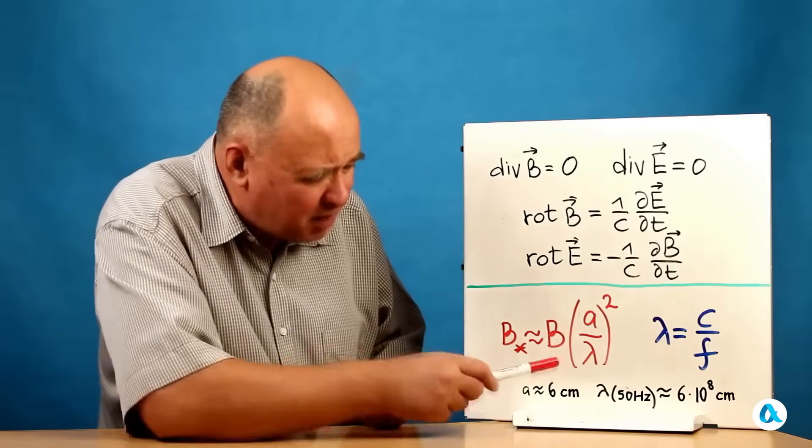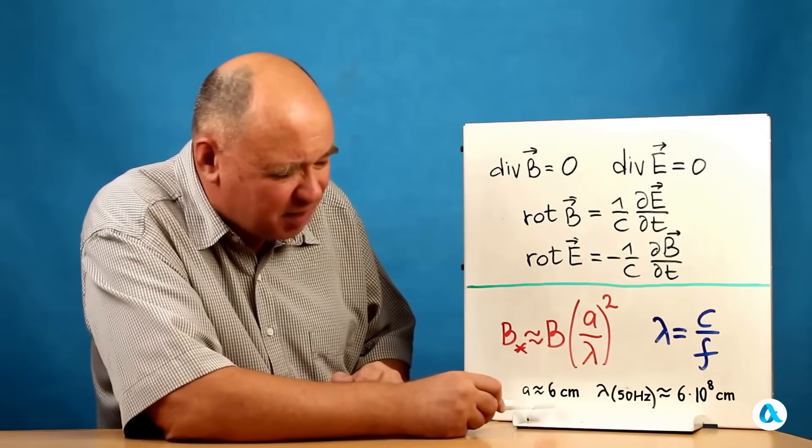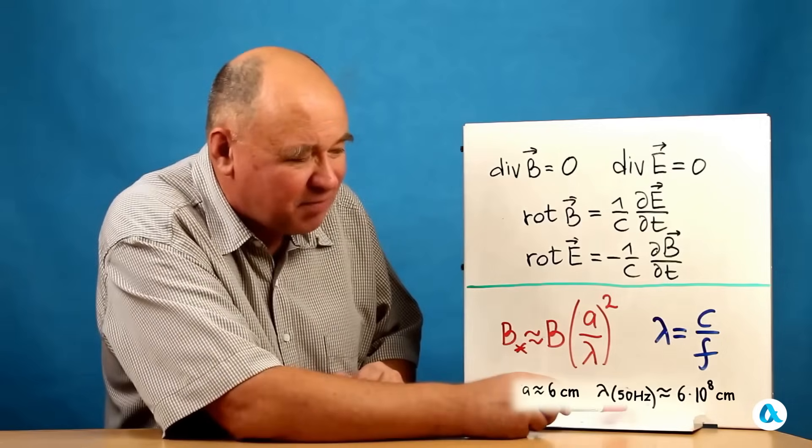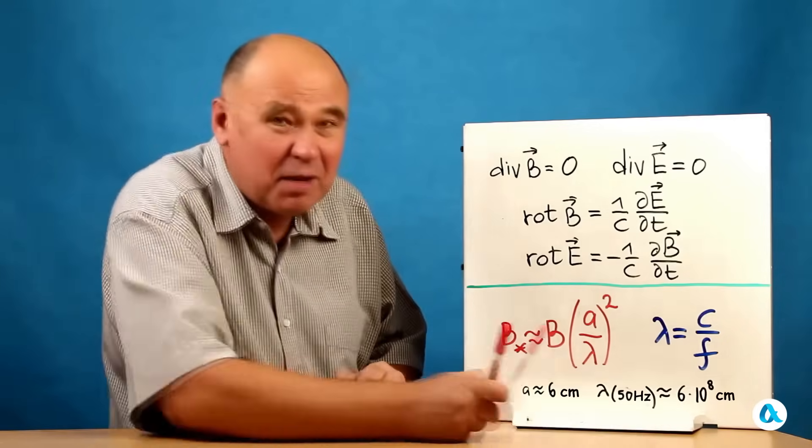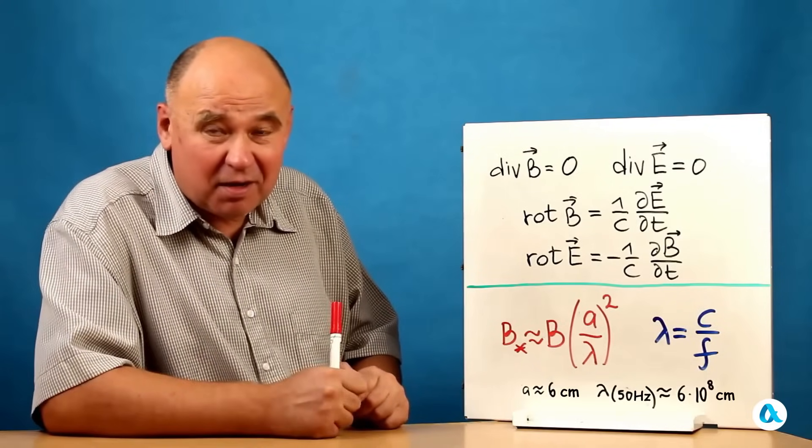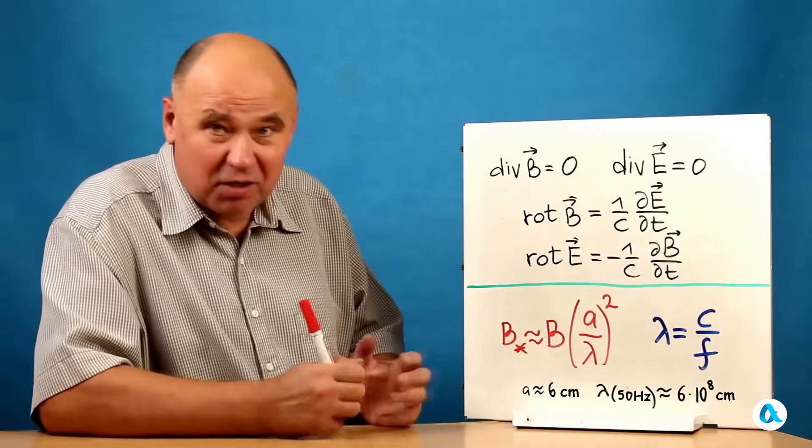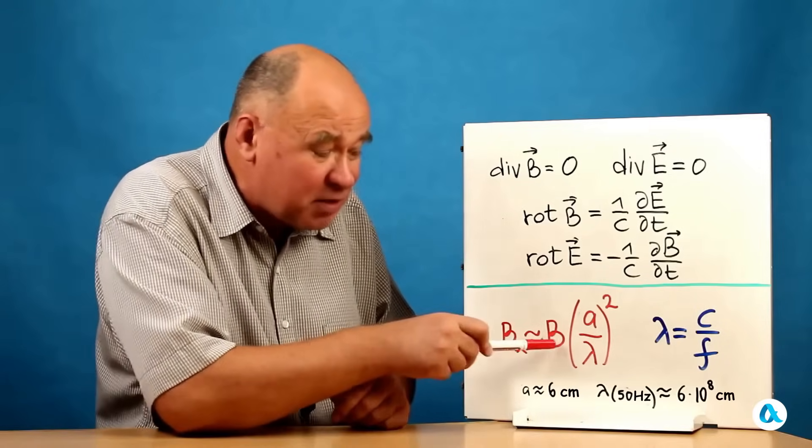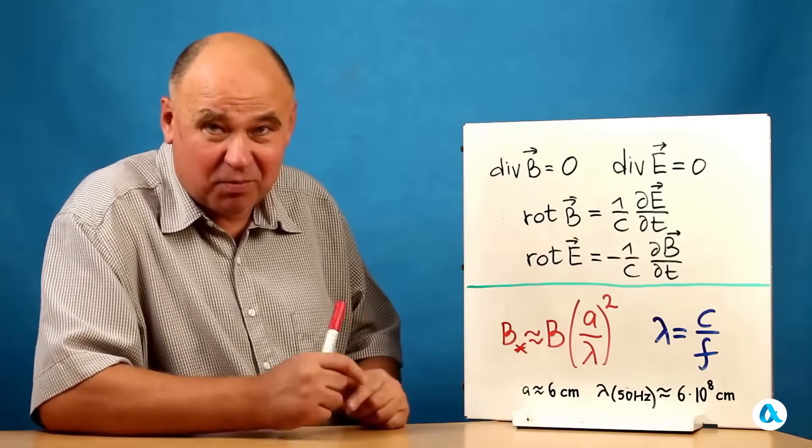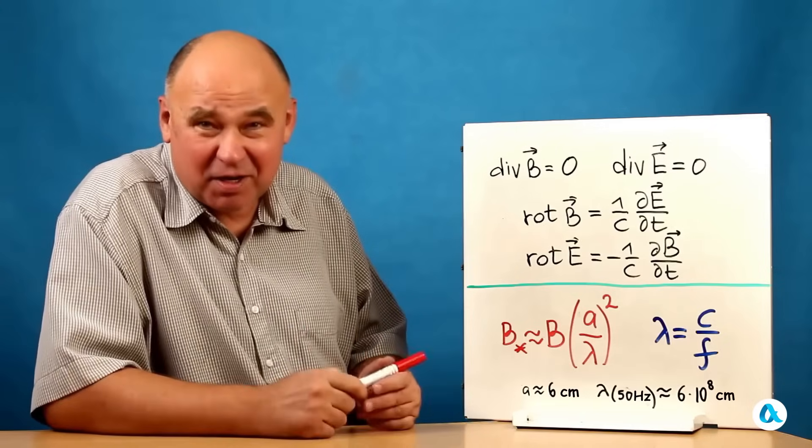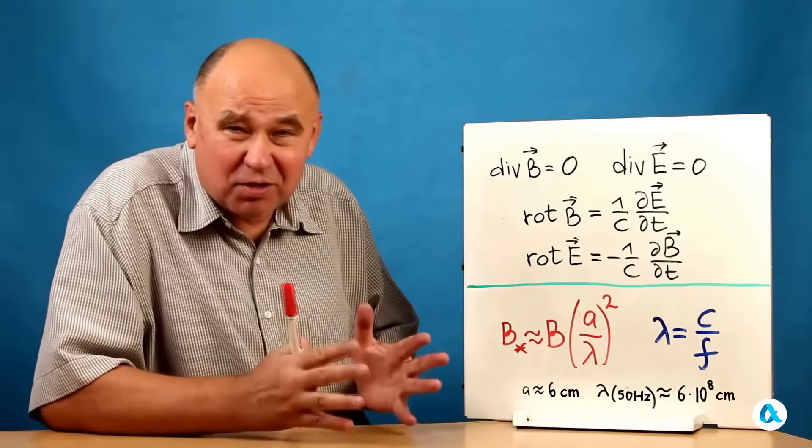Let's estimate. I find it convenient to take 6 centimeters as the characteristic size of the transformer, and then lambda at 50 hertz will be 6 times 10 to the power of 8 centimeters. It is 10 to the power of 8 times larger. Now the square is 10 to the 16th, which means this field B with asterisk is less than the field inside the core by 10 to the 16th.